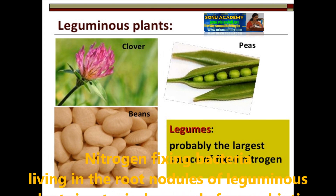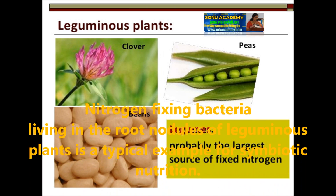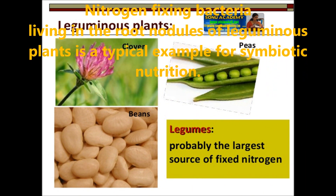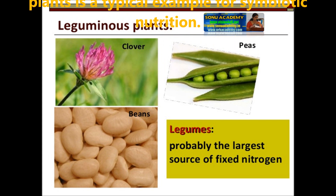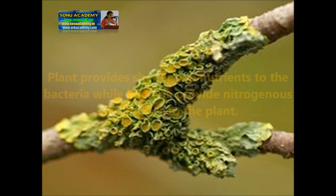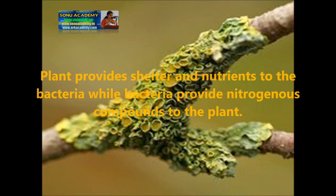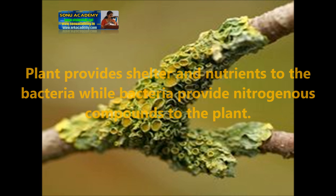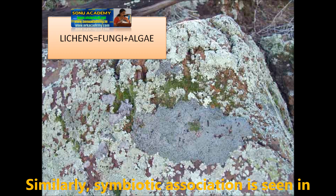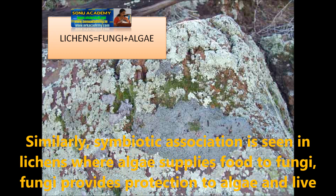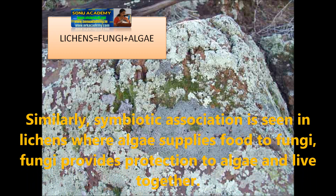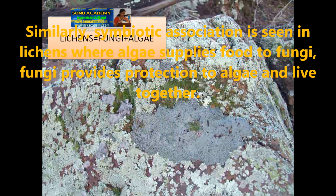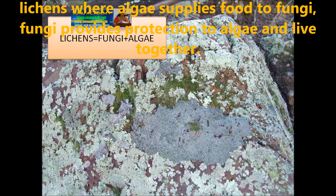Nitrogen-fixing bacteria living in the root nodules of leguminous plants is a typical example of symbiotic nutrition. Plants provide shelter and nutrients to the bacteria, while the bacteria provide nitrogenous compounds to the plant.